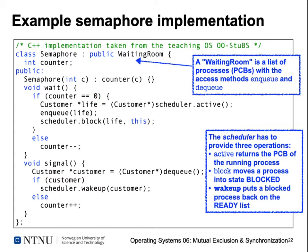If the counter is equal to zero, we get the active scheduler and enqueue our current process into the waiting queue of the scheduler, then tell the scheduler to block the current process for exactly this event. If the counter was larger than zero, we just decrement it and leave the wait method so we can enter the critical section. The wait method interacts with the operating system scheduler to change the order of processes — indicating to the OS: please block this process and get another one to continue running.